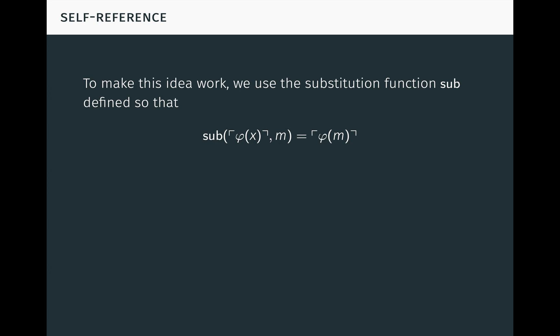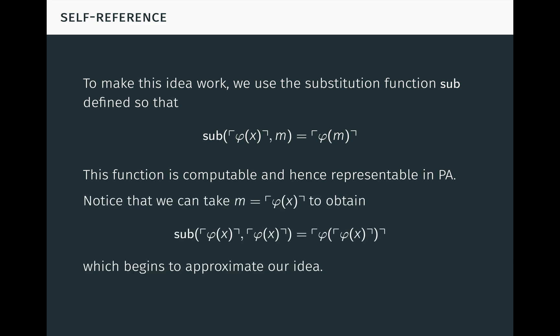To make this idea work, we use the substitution function sub, defined so that sub of the Gödel number of phi and the number m is the Gödel number of the sentence obtained by substituting m for the free occurrences of x in phi. This function is computable and hence representable in Peano arithmetic. Notice that we can take m to be the Gödel number of phi of x to get phi substituted into itself, which begins to approximate our idea.